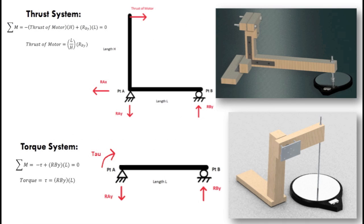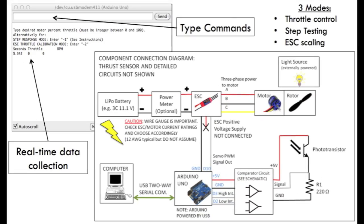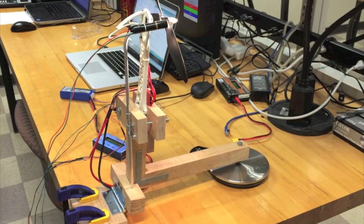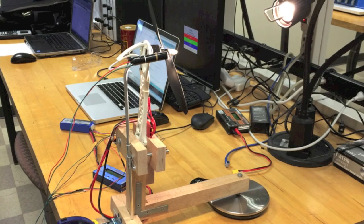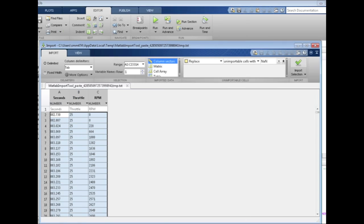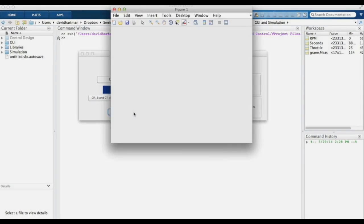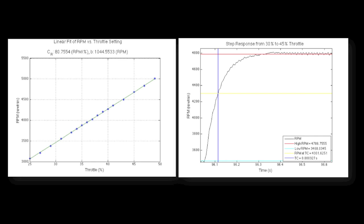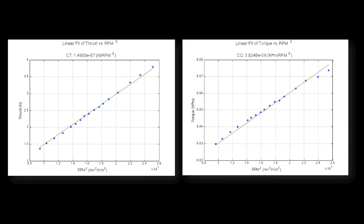We developed test systems that allow easy data collection for finding these parameters. Shown here is an example of a test setup. Data is sent in real time to the computer from an Arduino Uno, and this data is imported to MATLAB with a simple copy-paste command. We provide a convenient GUI to run analysis functions we've created. Shown here are the automatically generated plots obtained by filling in the relevant details and clicking the run button.